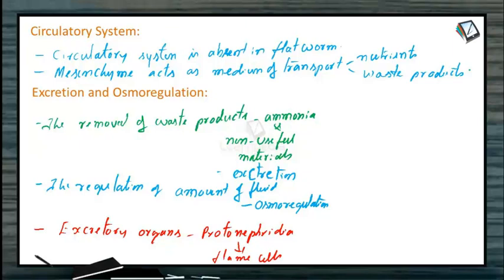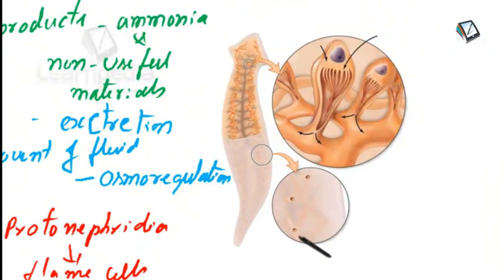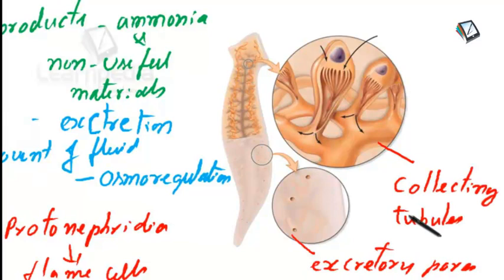Flatworms are ammonotelic animals. Here you can see the excretory pores, and these are all collecting tubes of protonephridia, and they are fitted with the flame cells.